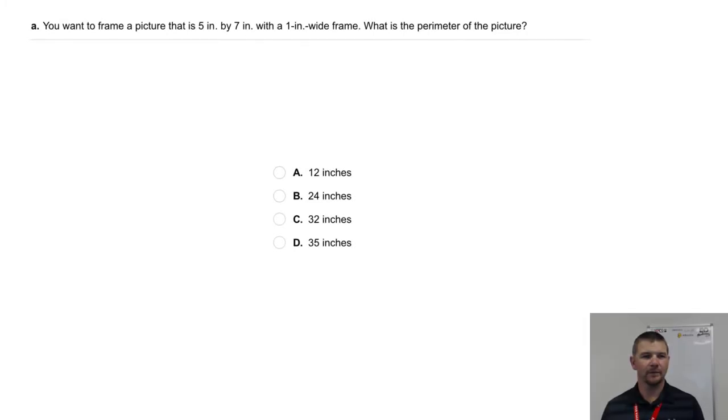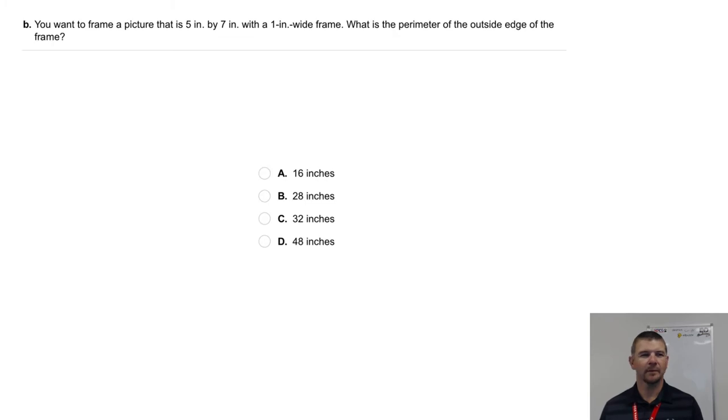Your turn, part A. You want to frame a picture that is 5 inches by 7 inches with a 1 inch wide frame. What is the perimeter of the picture? Part B. You want to frame a picture that is 5 by 7 with a 1 inch wide frame. What's the perimeter of the outside edge of the frame?